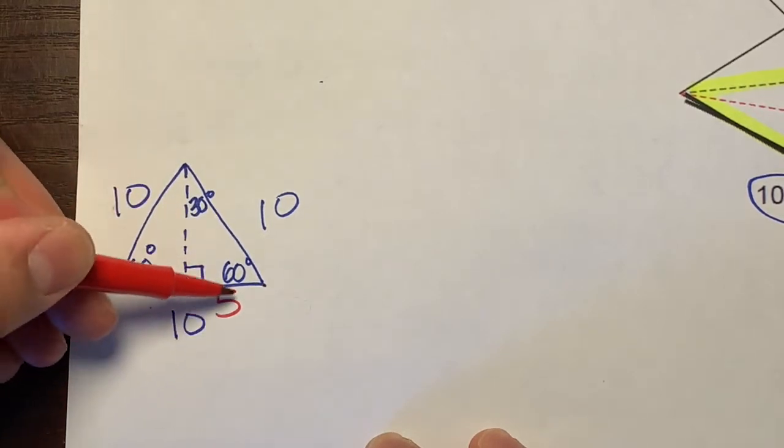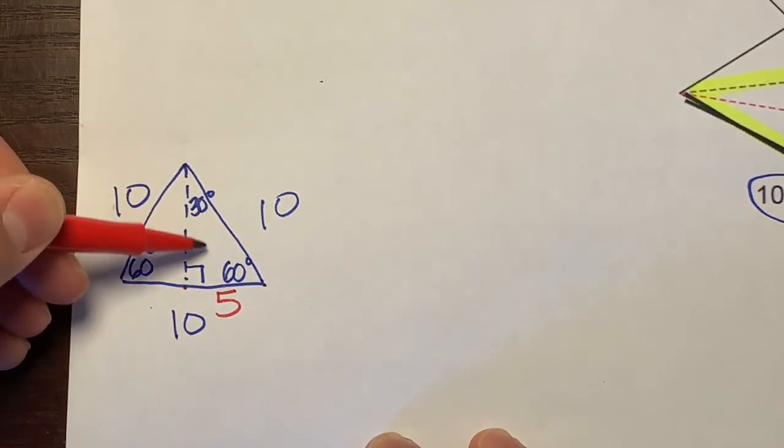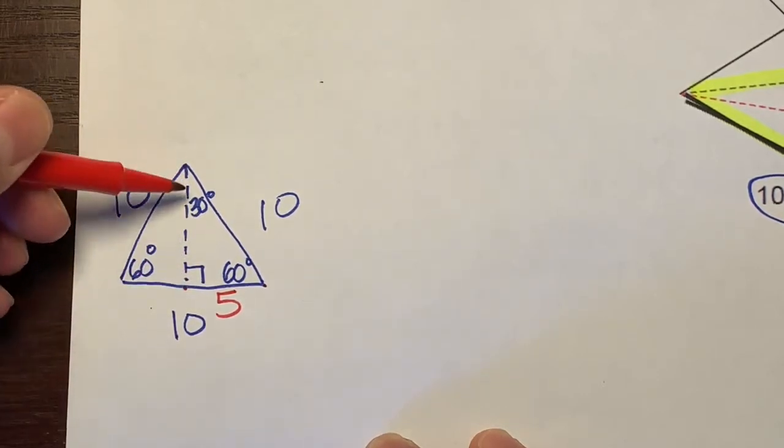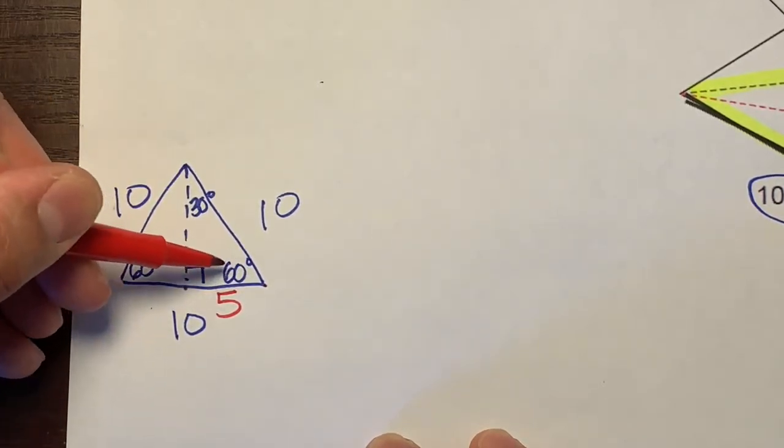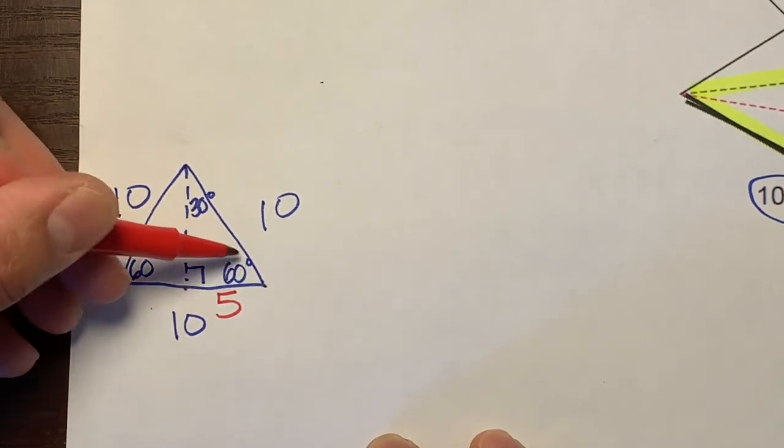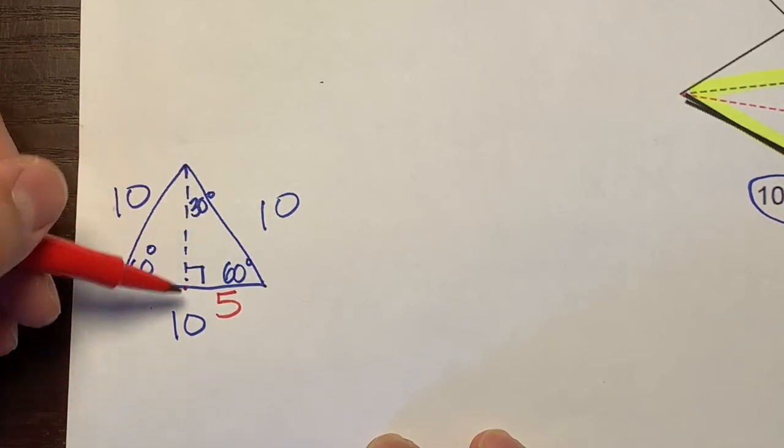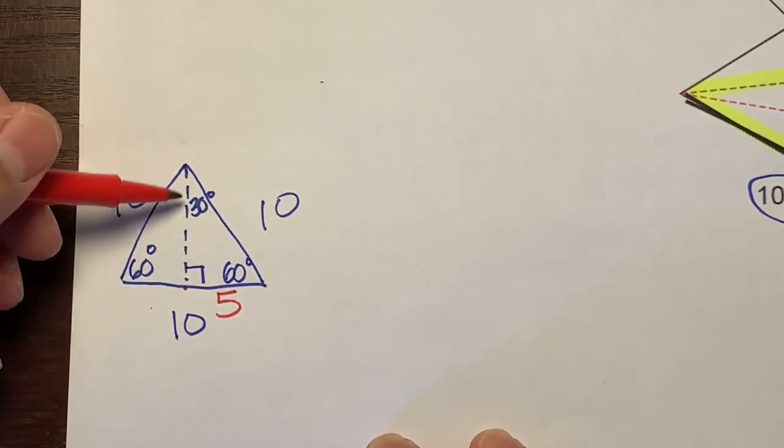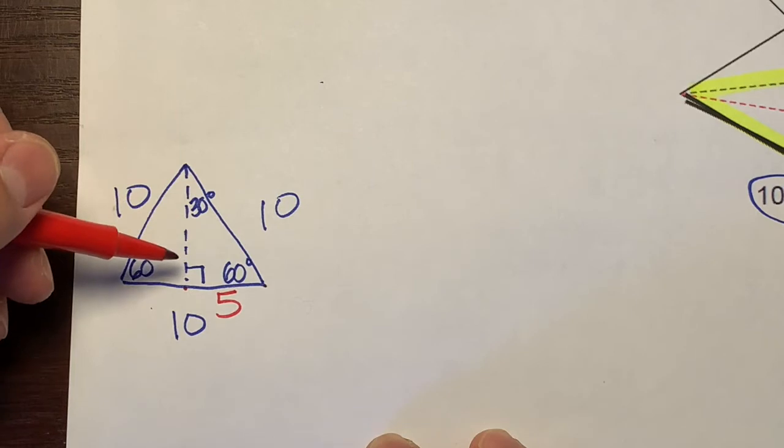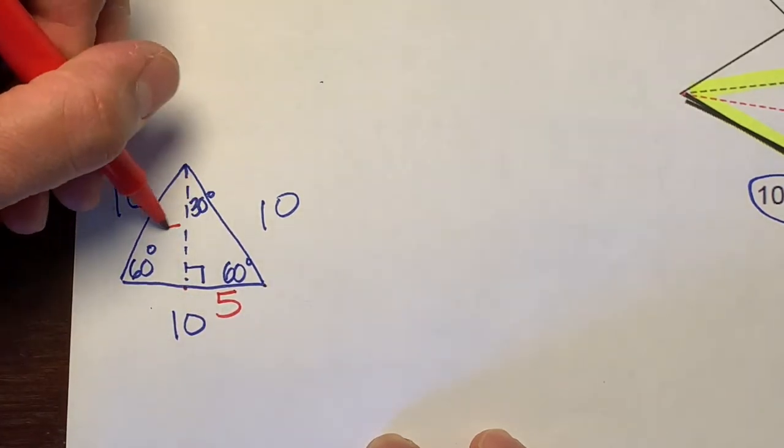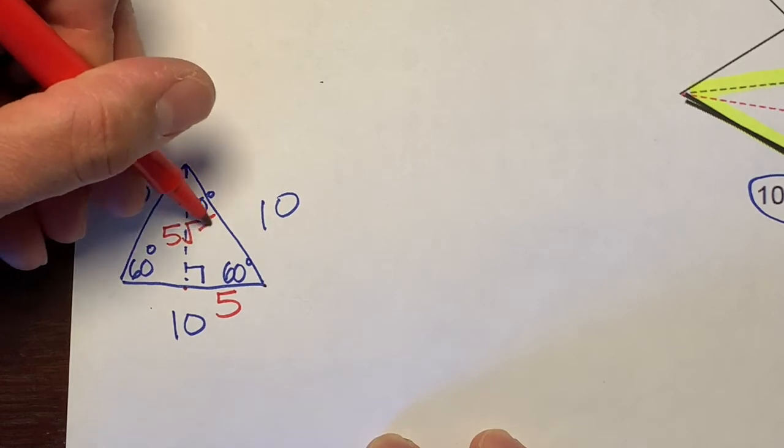Since this is a 30-60-90 triangle, if you remember the pattern or the shortcut for that, this 5 is the short side because it's opposite the 30-degree angle. This side is the middle side because it's opposite the middle angle, the 60 degrees. And this is the hypotenuse. But we want this side right here. Remembering the shortcut or the pattern, it's whatever the short side is, times radical 3. So this side would be 5 radical 3.